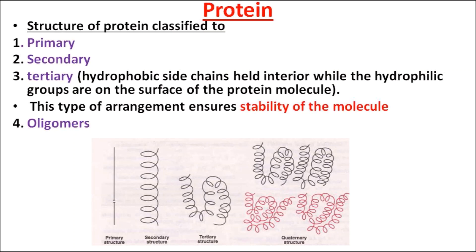Coming on to the structure of protein — protein structure can exist in a primary form, secondary form, tertiary form, and quaternary form, also known as oligomers. A protein is made up of many amino acids linked in a chain. They exist as a primary structure as a single chain. When you give it a twist and turn it becomes a secondary structure. More twists and turns give you the tertiary structure, which is the most stable form of the molecule.